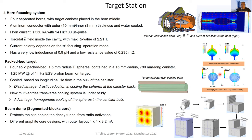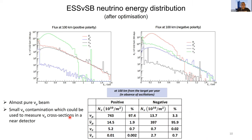The temperature and velocity distribution cross sections are shown from simulations. A new multi-entry transfer cooling system is now under study, offering homogeneous cooling of the spheres in the canister bulk. We are also designing a new beam dump structure based on a segmented block core, to protect the site behind the decay tunnel from radioactivation.